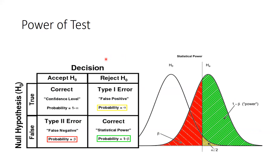We should also understand type 1 and type 2 errors. Type 1 error means when our null hypothesis is true and it is accepted — that is the correct decision, and here the probability is 1 minus alpha. Because the probability of a type 1 error is denoted as alpha. But when the null hypothesis is true but we had rejected it, that is known as type 1 error.